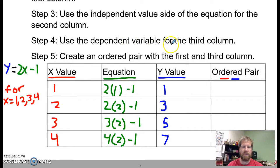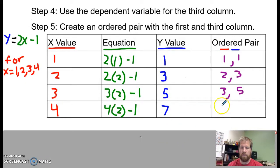So now I have my first three columns finished. And I'm going to fill in my ordered pair. My ordered pair is going to be my x value, which is one, followed by my y value, which is one. One, two; three, three; five, and four, seven.